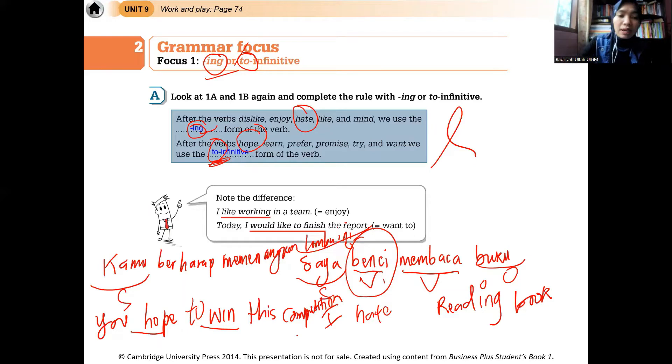Nah, bagaimana bisa tahu apakah kalimat itu harus diikuti -ing atau diikuti to, itu tidak ada rumusnya. Jadi, memang harus dihapal sebenarnya. Jadi, sebenarnya bukan juga dihapal. Biasanya kalau sudah keseringan nulisnya, biasanya suka ingat sendiri. Jadi, kalau ini ada beberapa catatan, kalau ketemu kata dislike, tidak suka, atau justru like, ada enjoy, hate, mind, nah, itu semua pakai -ing. Tapi, kalau ketemunya hope, learn, prefer, promise, try, want, itu menggunakan to infinitive.